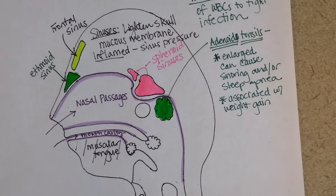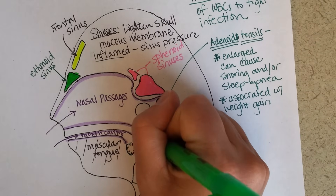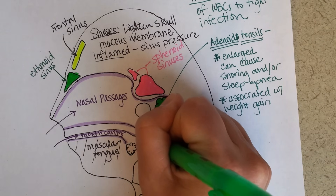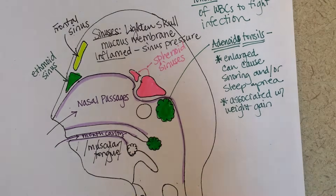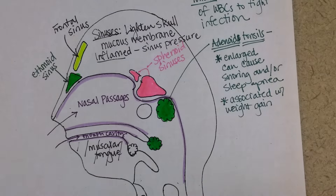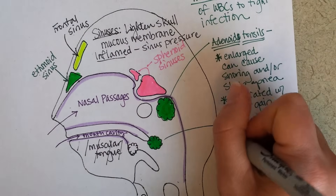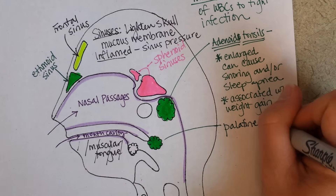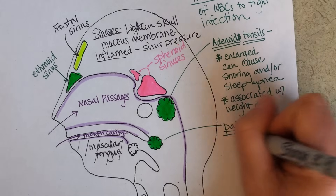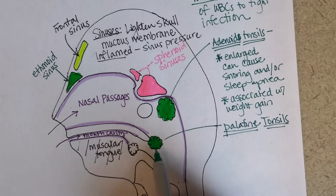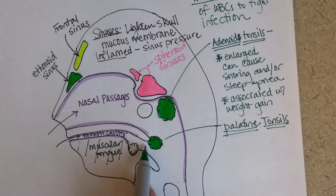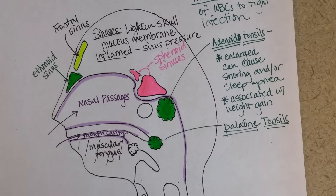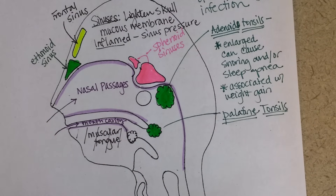Then there's another pair of tonsils at the back of your throat — these are the ones you can see. If you look in the mirror, at the very back on either side of the back of your throat, these are the palatine tonsils. They're called palatine tonsils because they're closest to the palatine part of the mouth.